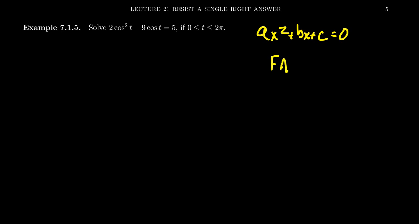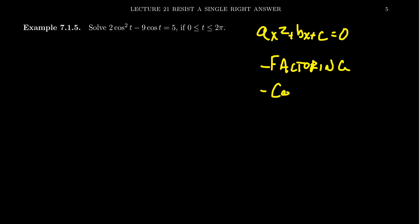The first technique would be to factor it. There are various factoring techniques you could use to factor quadratic polynomials, and those factoring techniques would also apply in a setting like 2cos²(t) − 9cos(t) = 5. The second strategy is to complete the square. Completing the square is introduced as a strategy because factoring is not always successful — not every quadratic can be factored using real or rational coefficients.